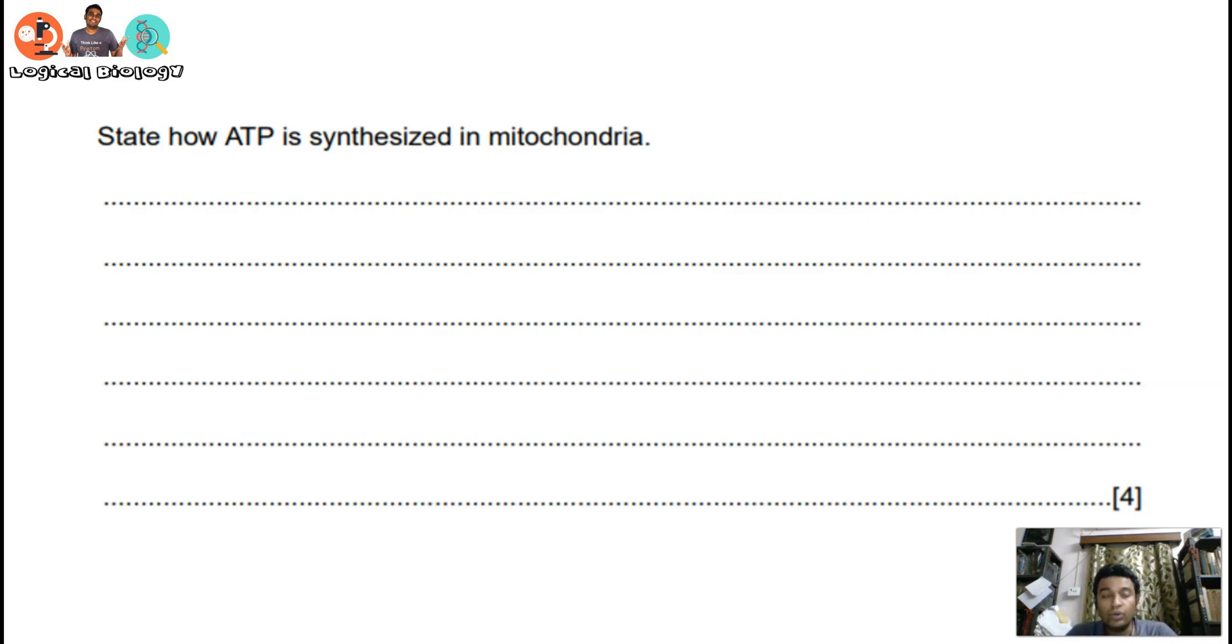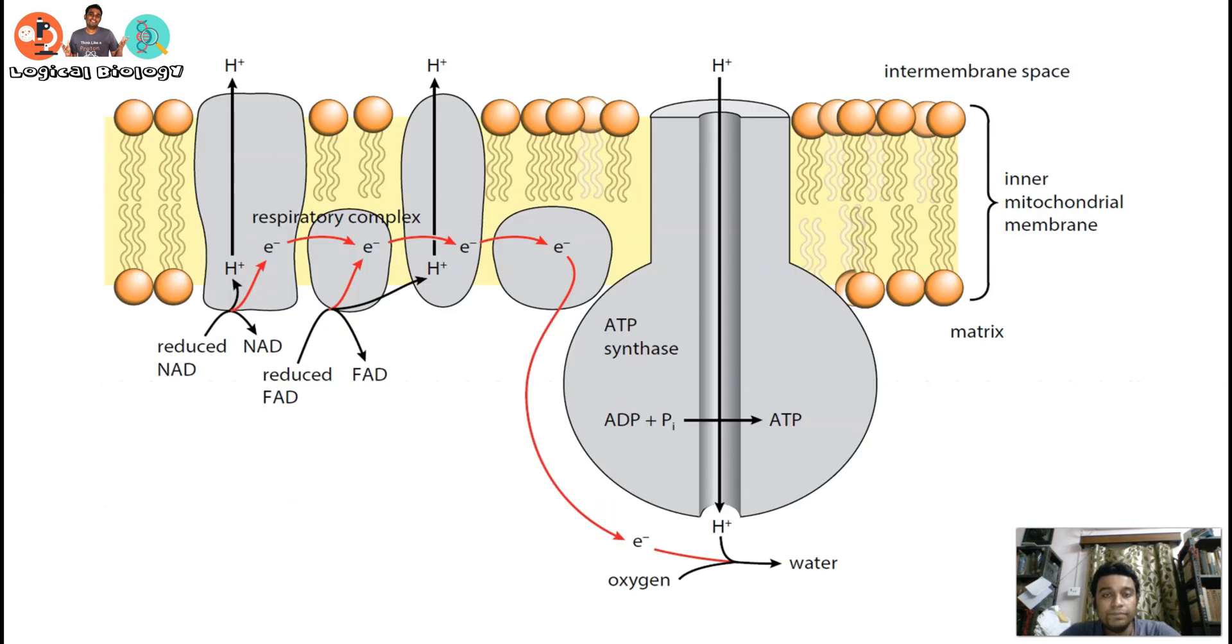To understand this, let's go to the next slide. This is a classic example, a classic diagram that I've taken from your textbook. As you can see, multiple steps and multiple events are happening here one after another.